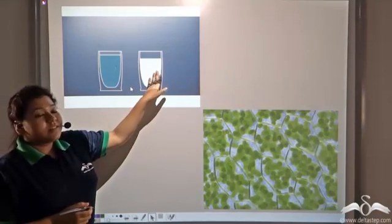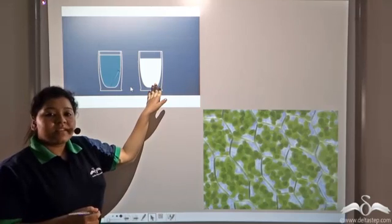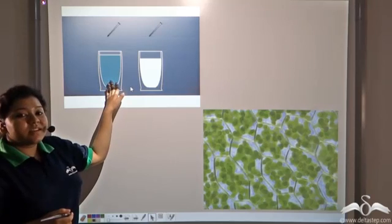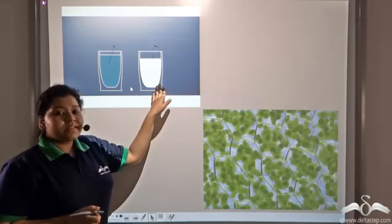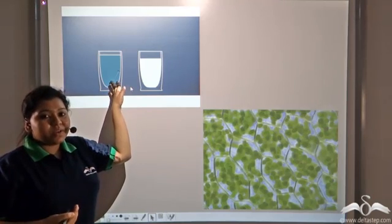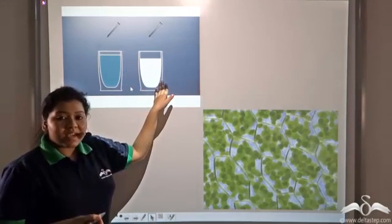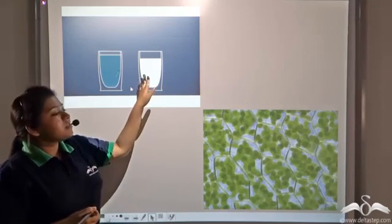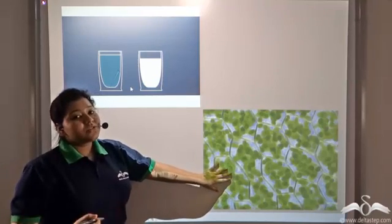There are two containers. The first container has water in it and the second container contains milk, and you put a pin in them. The pin is visible in the first container but you cannot see the pin in the second container. This is because water, being transparent, allows light to pass through it and that is why we are able to see the pin. But since milk is opaque, it does not allow light to pass through it and that is why the pin becomes invisible. So now can you tell me about the nature of the cellular fluid in which all the structures are embedded?